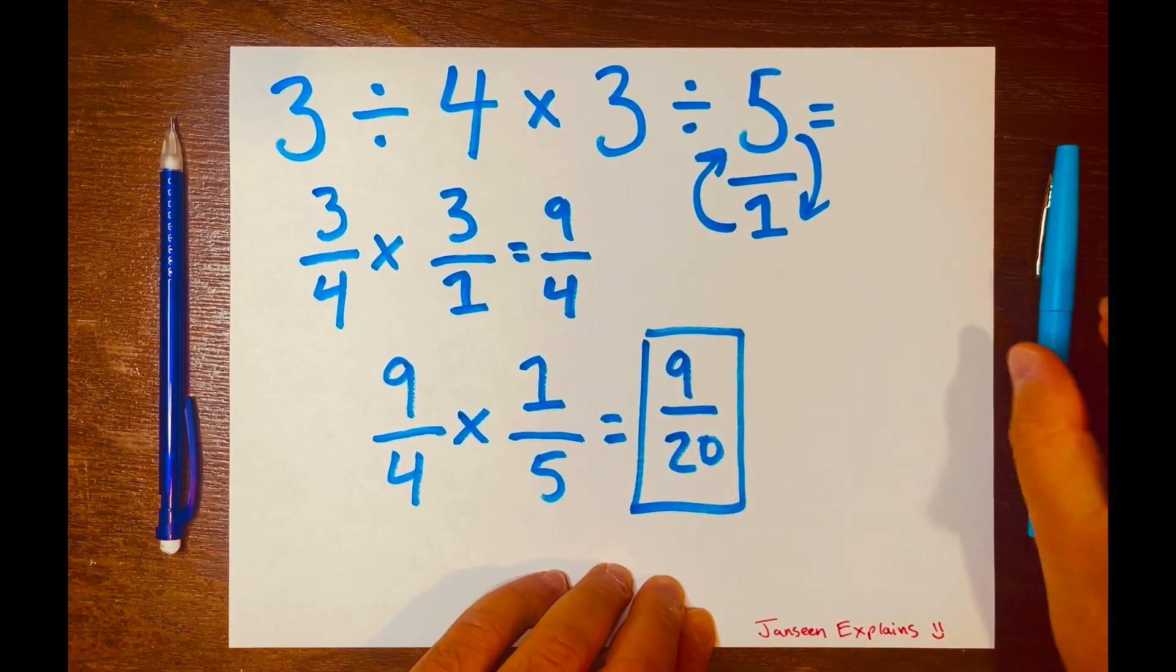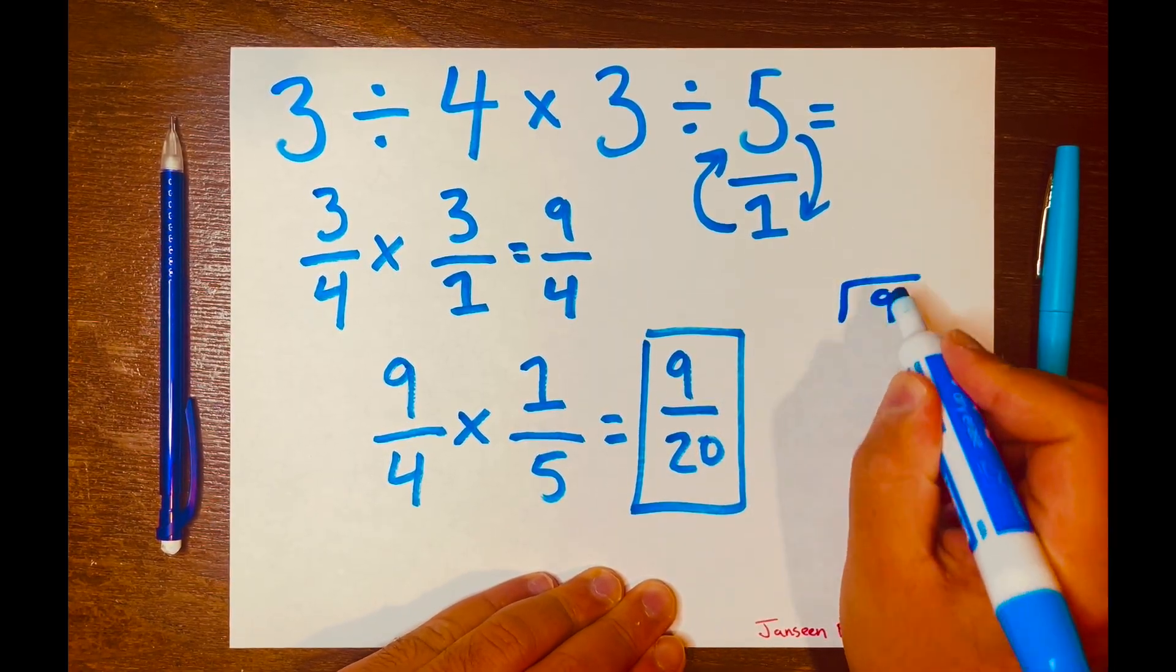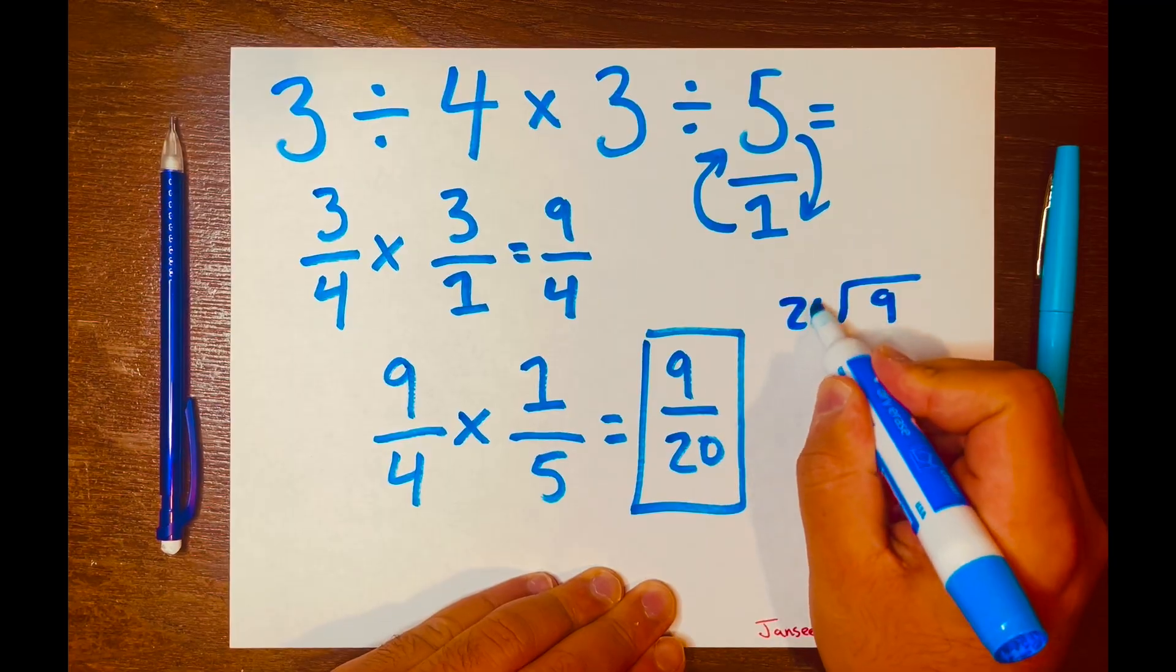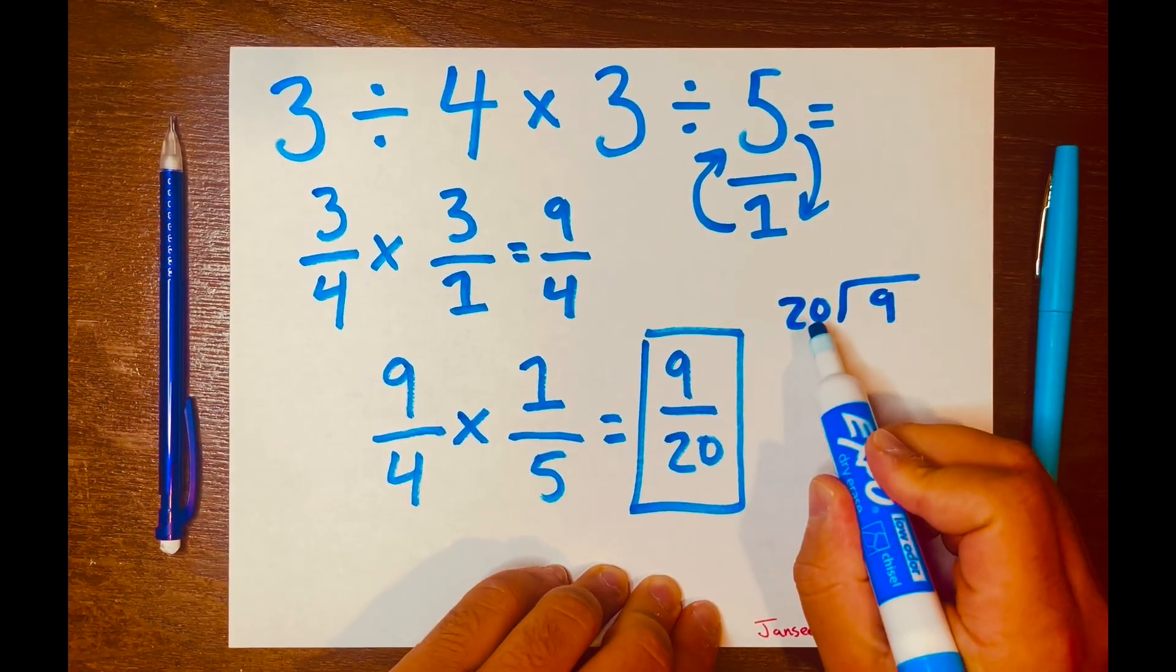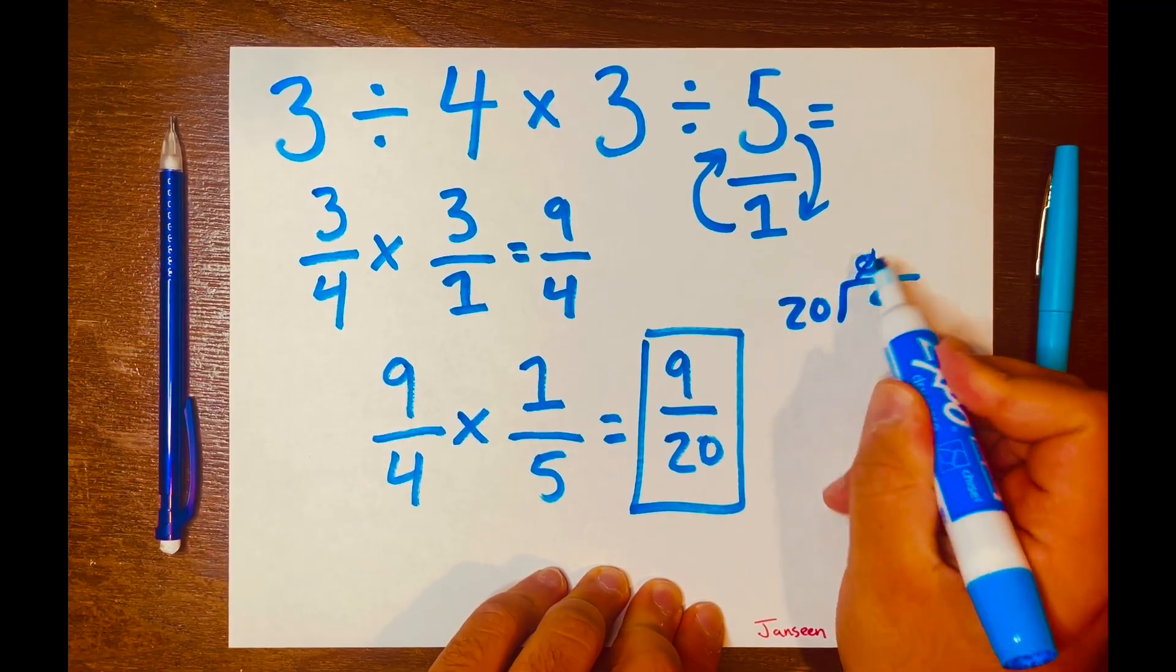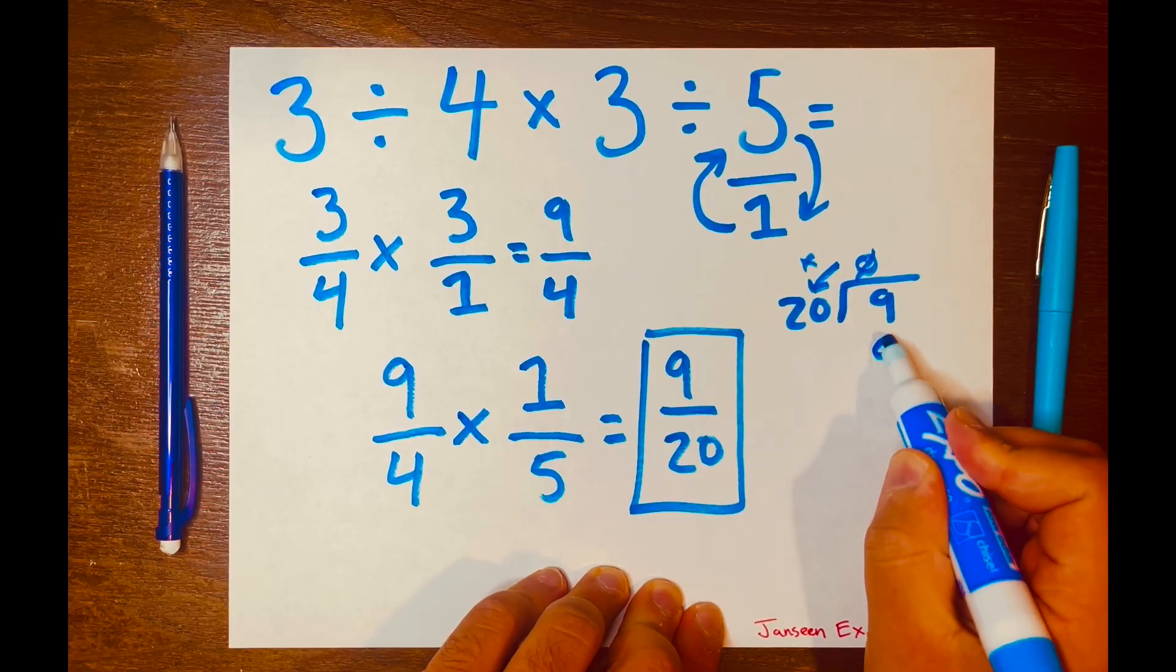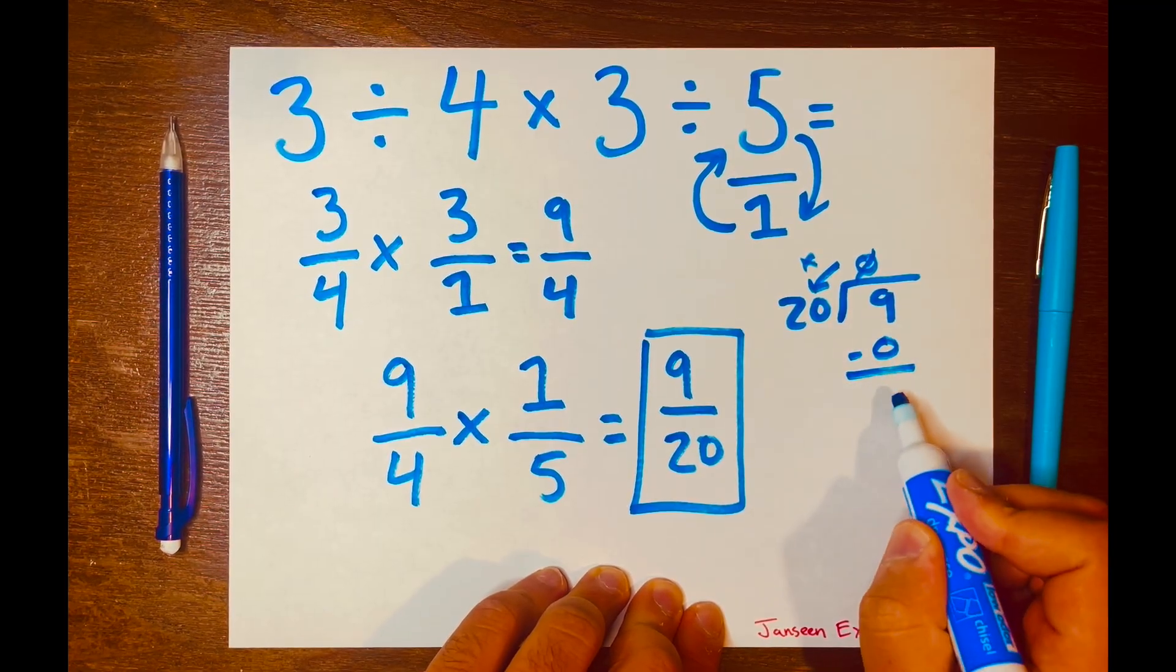So let's go ahead and get a decimal answer for this nine over 20. We're going to use long division, so nine will be the dividend, 20 will be the divisor. How many times can 20 fit into nine? You cannot, so it'll be zero times. 20 times zero is zero. Nine minus zero is nine.